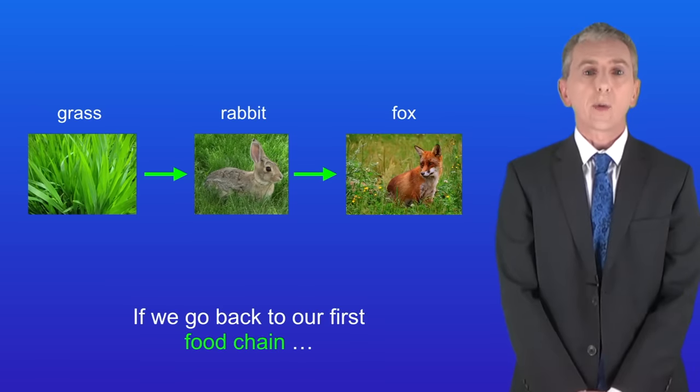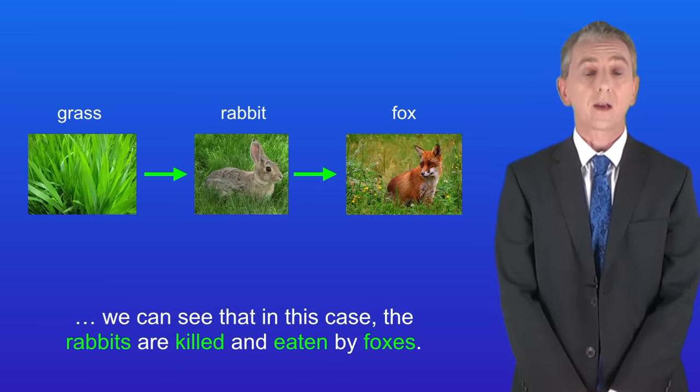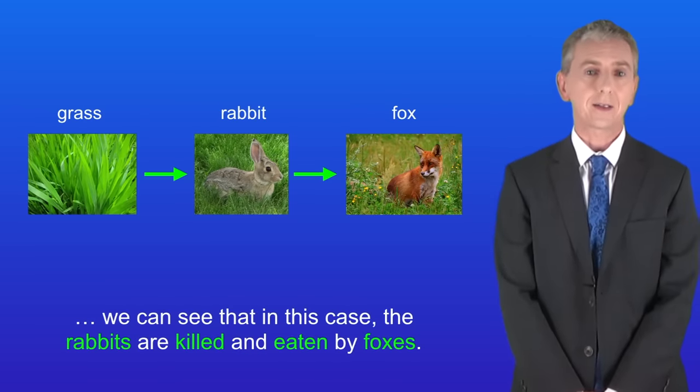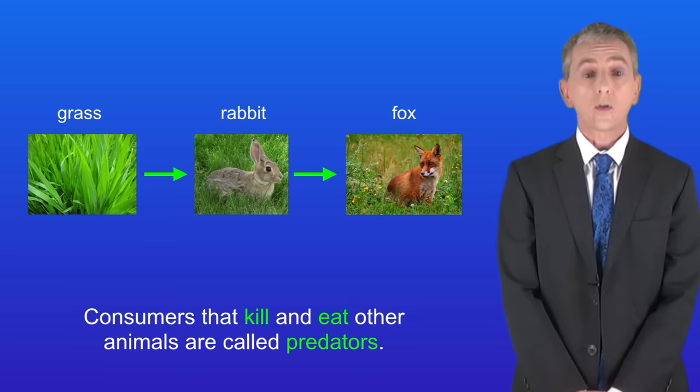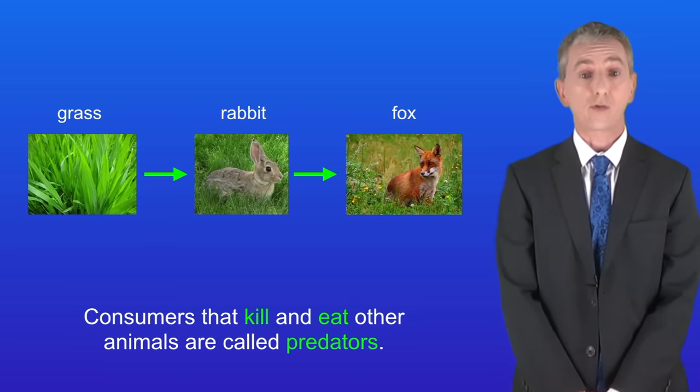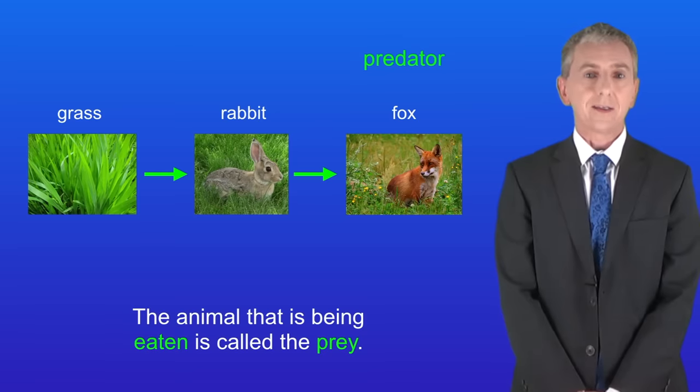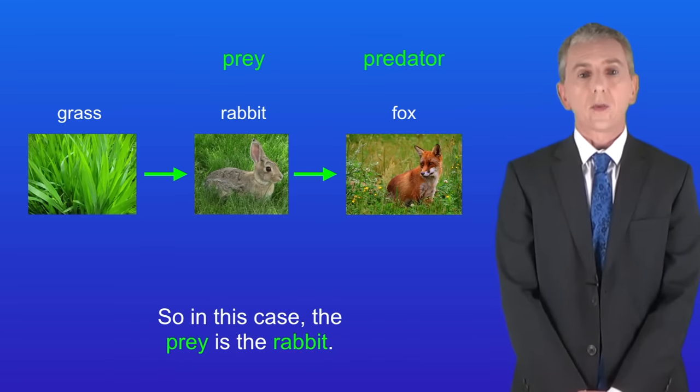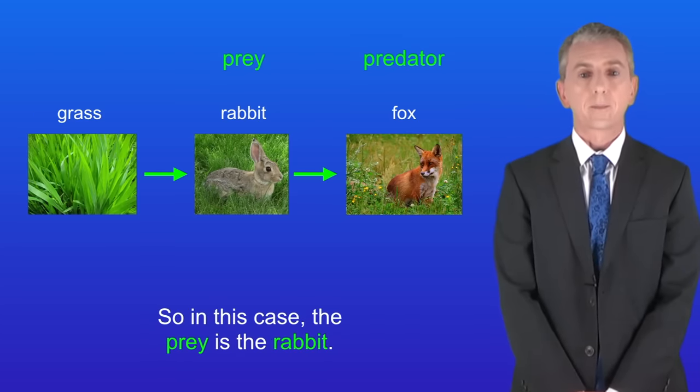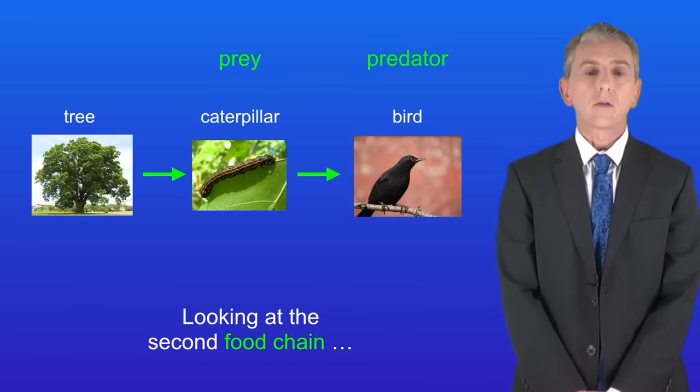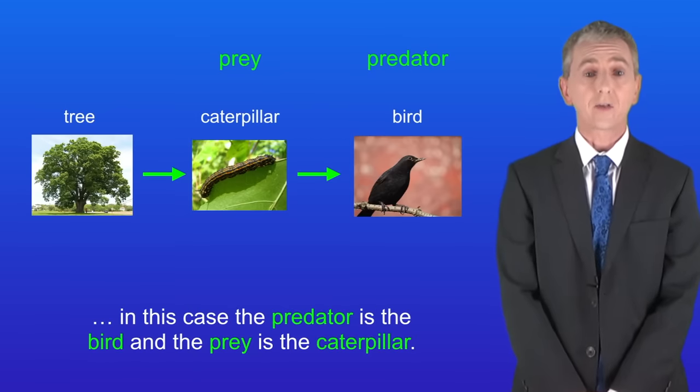Okay now if we go back to our first food chain we can see that in this case the rabbits are killed and eaten by foxes. Consumers that kill and eat other animals are called predators. So in this food chain the fox is the predator. The animal that's being eaten is called the prey. So in this case the prey is the rabbit. Looking at the second food chain in this case the predator is the bird and the prey is the caterpillar.